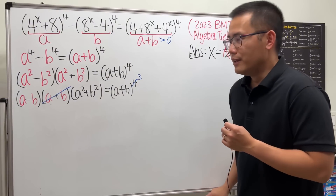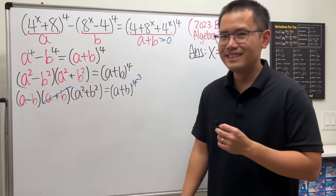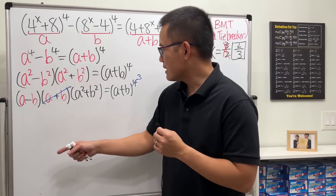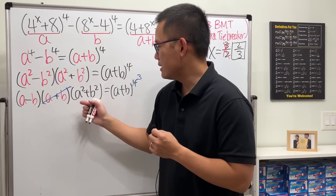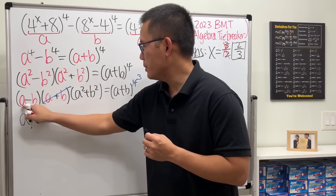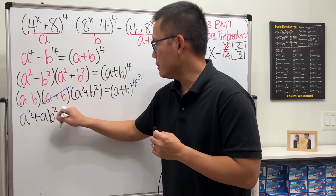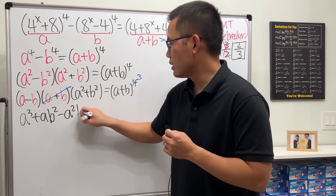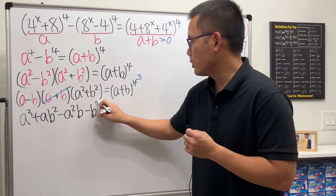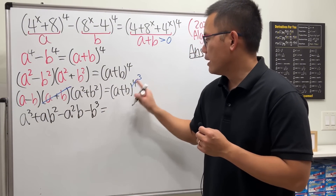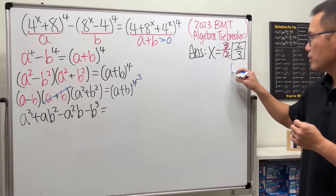Now on the left-hand side, let's multiply out a minus b times a squared plus b squared. That gives a cubed plus a·b squared minus a squared·b minus b cubed.